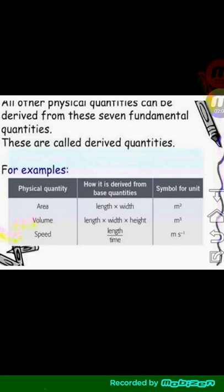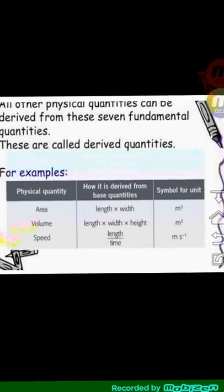For example, we have the area, the volume, speed, and density, all of which are dependent or derived from these basic or fundamental quantities. The units are also derived from fundamental units.